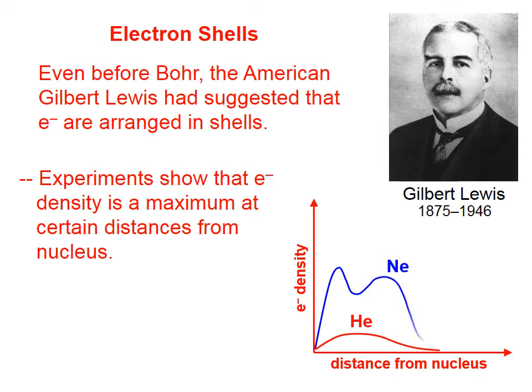If we do neon, it has two maxima. Helium only has one. This corresponds to the fact that helium only has a single energy level, whereas neon has a first energy level indicated by this first peak here, and then it has a second energy level associated with the second peak.